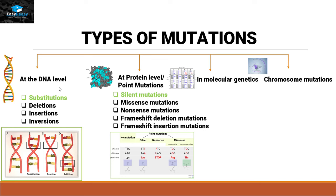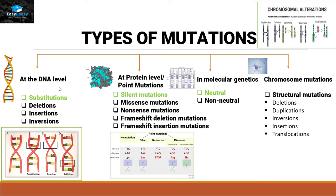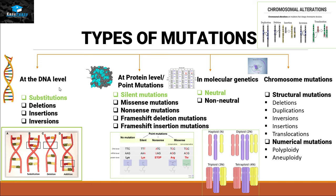At the protein level or point mutations, we have silent mutations, missense mutation, nonsense mutation, frameshift deletion mutation, and frameshift insertion mutation. In molecular genetics, we have neutral and non-neutral categories. In chromosome mutations, we have two categories: the first is structural mutations, which include deletions, duplications, inversions, insertions, and translocations; and the other is numerical mutations, which include polyploidy and aneuploidy.